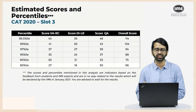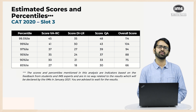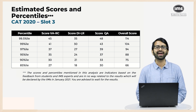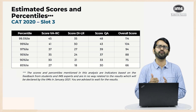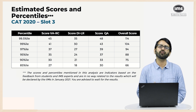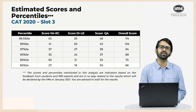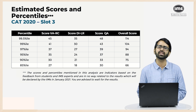If we see individual sections, verbal ability was on the more difficult side. So if you compare with your SimCATs, the marks for each percentile will be slightly lesser. However, we've received feedback that a few SimCATs were of very similar level of difficulty to the CAT today. We feel the 99 percentile for the verbal ability section should be around 41 marks, 99.5 percentile around 45 marks, 97 percentile around 37 marks, 95 percentile around 35 marks, 90 percentile 30 marks, and 85 percentile 27 marks.